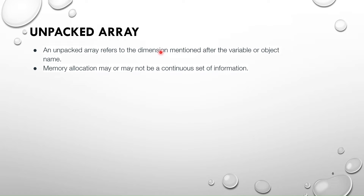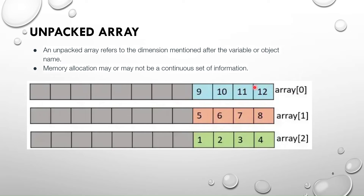Unpacked arrays refer to the dimension mentioned after the variable or object name. Memory allocation may or may not be a continuous set of information. The bits inside each array element are still contiguous, but array[0], array[1], and array[2] are not packed linearly together — array[0] is one row, array[1] is a separate row, array[2] is another row. So even though bits inside are packed, the array elements themselves are unpacked.